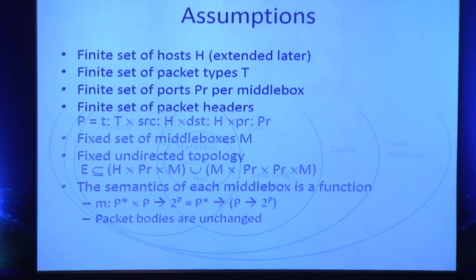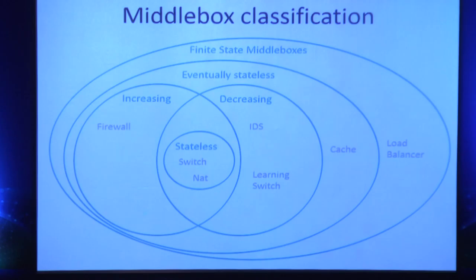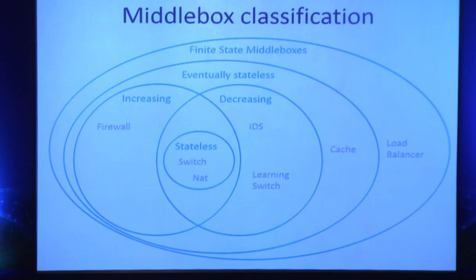In this work we try to understand the different types of middle boxes, their properties, and what that means from a verification perspective. We came up with a hierarchy describing the kinds of middle boxes. Depending on the type deployed in your network, we can tell you what you can and cannot verify. The most general case is the finite-state middle box, with subclasses: stateless (no state), increasing (forwarding behavior increases over time), decreasing (forwarding behavior decreases), and eventually stateless.